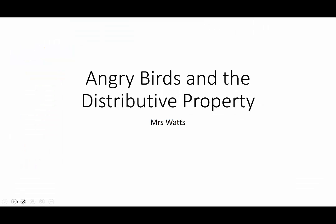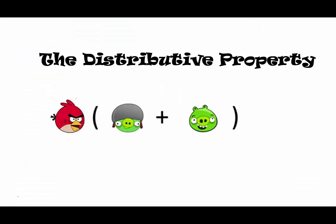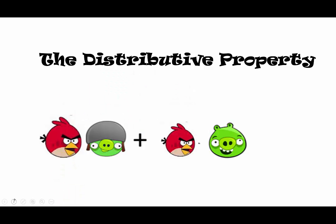Angry Birds and the distributive property. In Angry Birds, the red bird is placed into the slingshot and launched at the pigs. So here goes the angry bird flying through the air. The angry bird went flying through the air and crashed into both pigs.